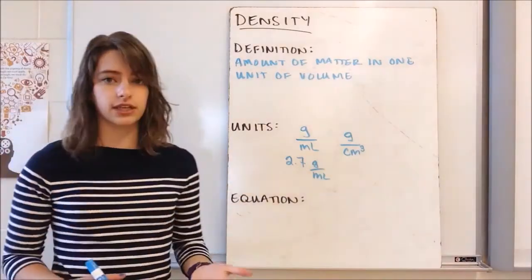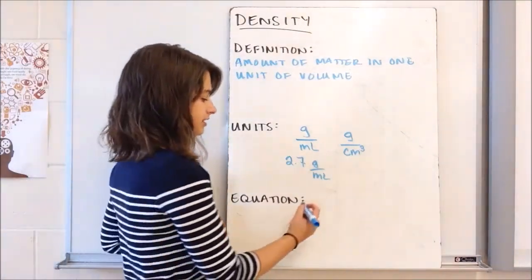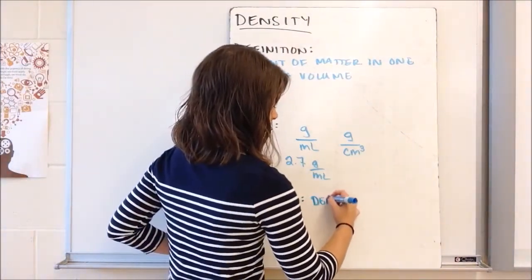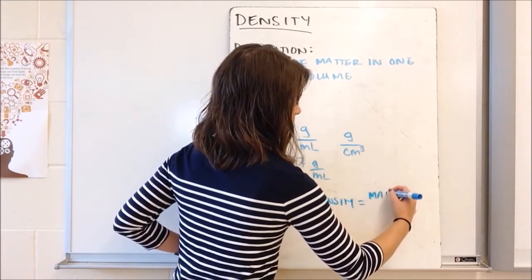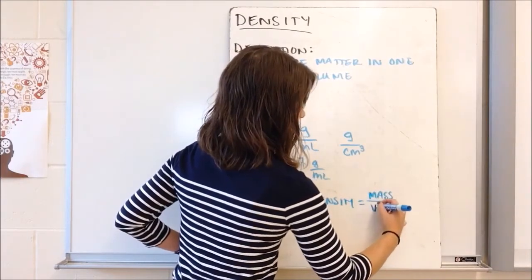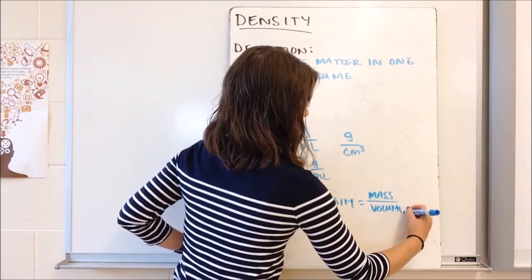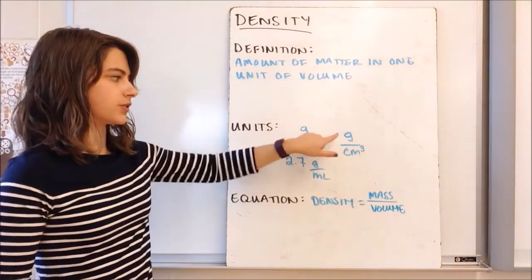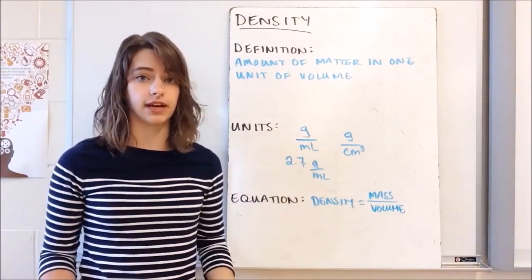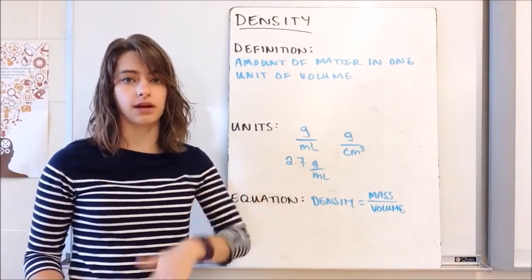For the equation, it's very simple. Density equals mass divided by volume. We're taking the numbers that we get for grams and milliliters, or grams and centimeters cubed, and we're simply dividing them. It's always mass divided by volume.